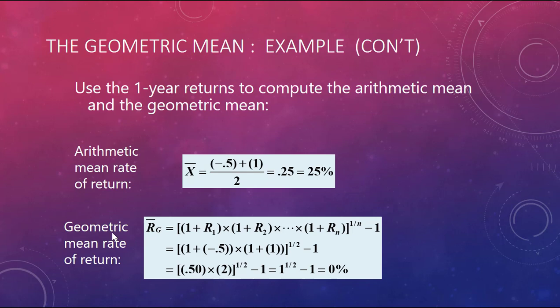Geometric mean, then, is much more appropriate when we're talking about rates of return over time or growth rates. So here, when we put in the negative 0.5 and the 1 into our formula here, we put them in for our rates. We add one to each, that becomes 0.5 and 2 times those two together.